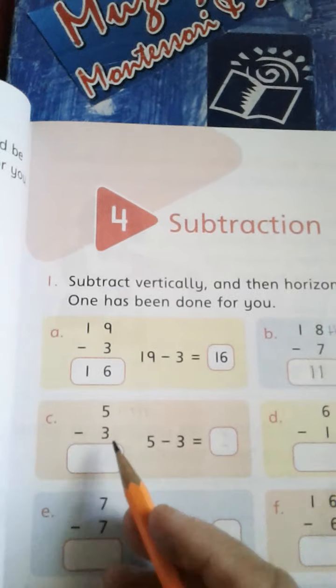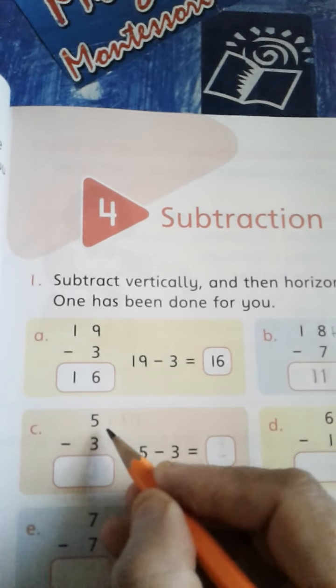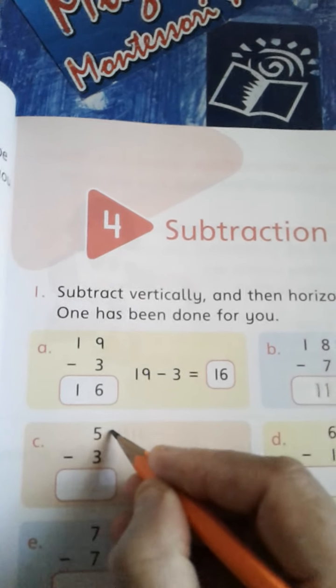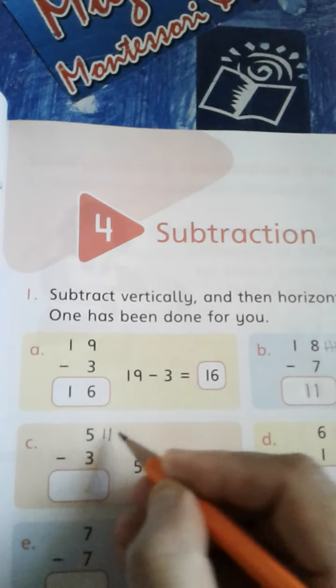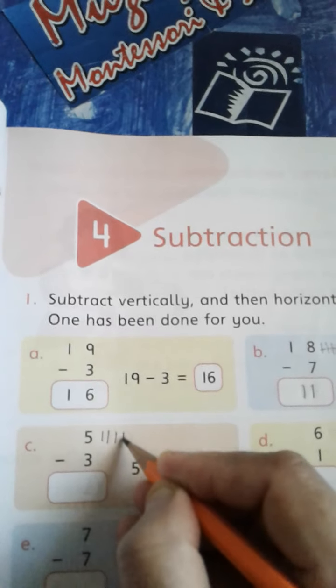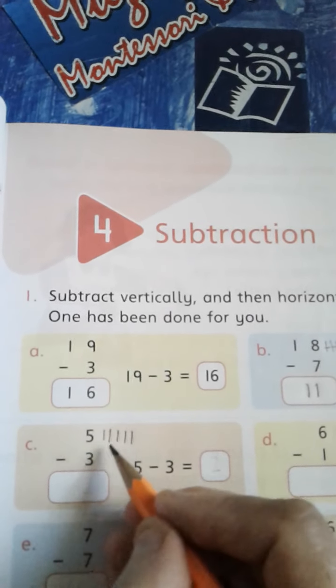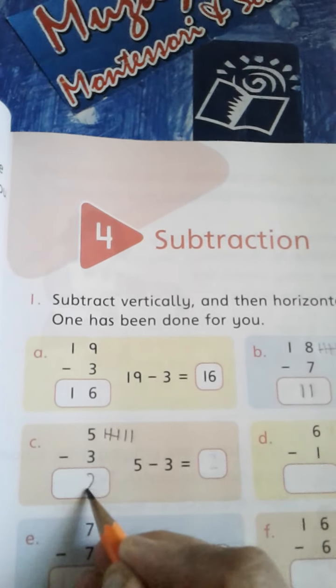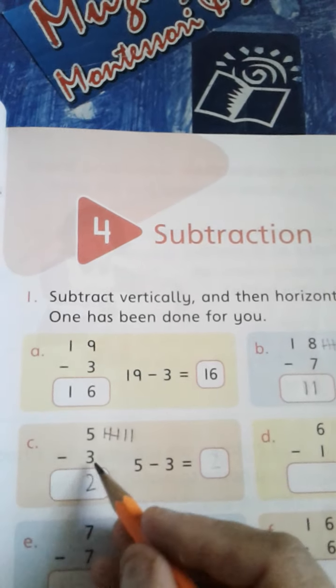Move to another one. We have to subtract 3 from 5, so we could draw 5 lines here, and we have to subtract 3: 1, 2, 3. How many numbers are left? Just 2. So 5 minus 3 is equal to 2.